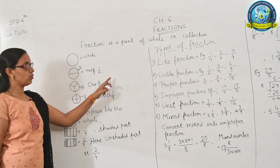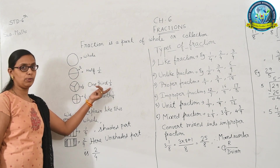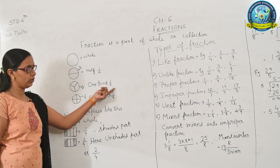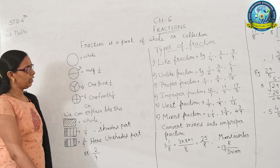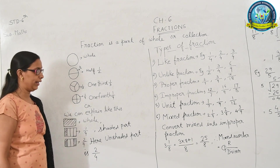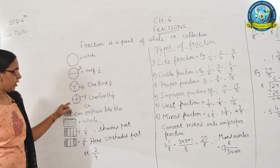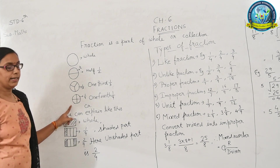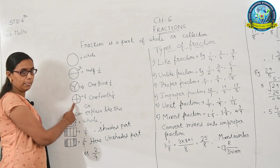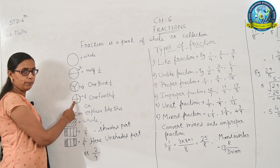Children, what is the top number called? Numerator. And the part of the fraction that is on the lower side — usko hum denominator bolte hai. In the next figure, the pizza is divided into 4 equal parts — 1, 2, 3 and 4.